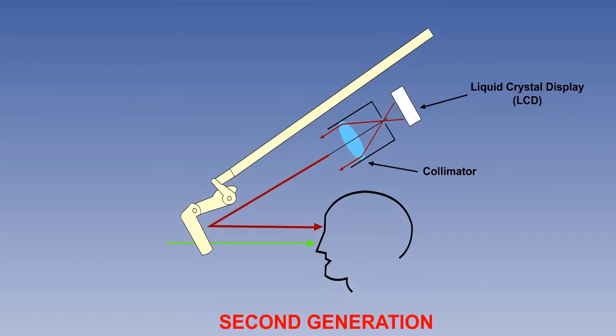Second generation systems replace the cathode ray tube by a solid state light source such as a liquid crystal display. This saves weight and does not need high voltages, thereby avoiding unwanted heat generation. It also largely overcomes the fade problem. These too are in current aircraft.